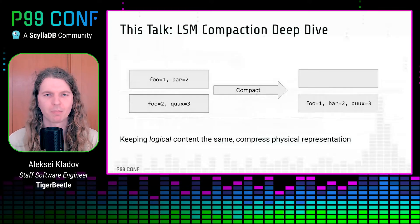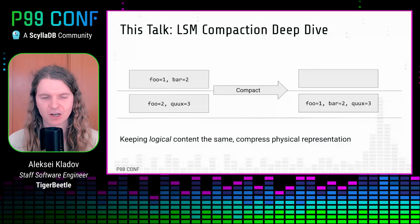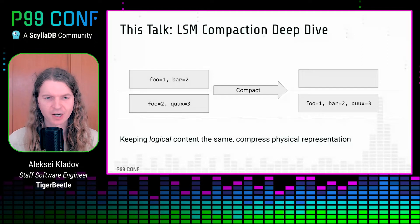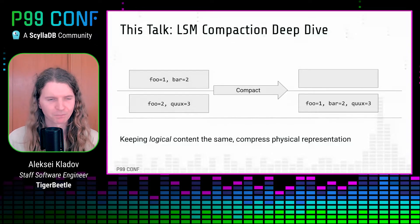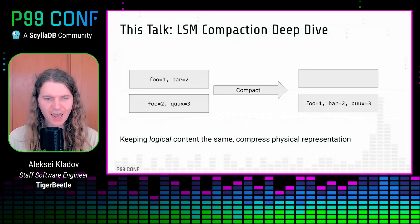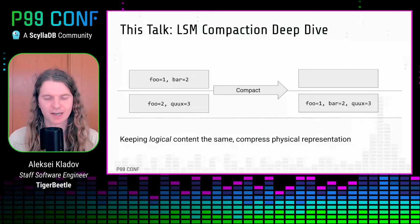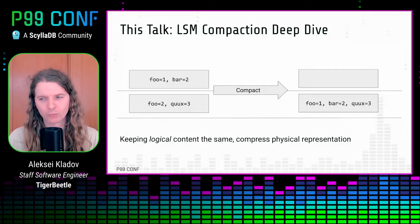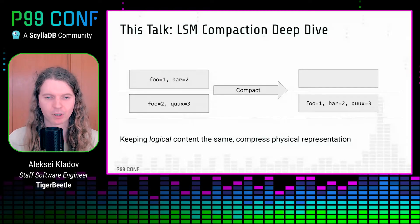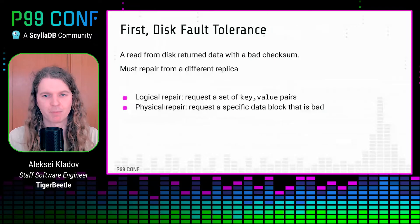In this talk, we are going to talk about LSM compaction, and this is going to be a rather short but deep dive. I won't be explaining what an LSM is and how LSM compaction works in general. Rather, I will focus only on what makes TigerBeetle's flavor of LSM compaction interesting. Briefly: compaction is a process which takes an LSM tree — a data structure on persistent storage — and optimizes its representation. Before and after compaction, the LSM tree contains the same logical set of key-value pairs, but after compaction it occupies a smaller number of disk blocks. We keep the logical contents the same while compacting the physical representation.